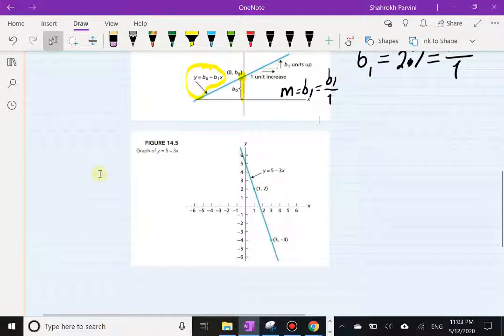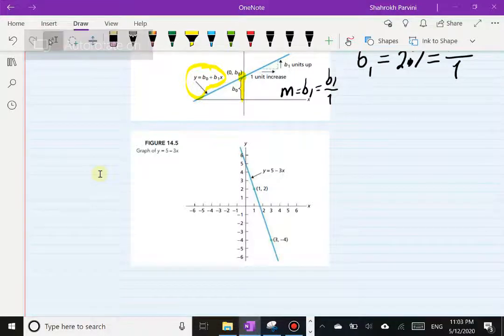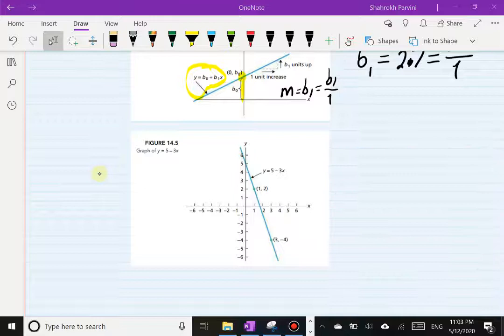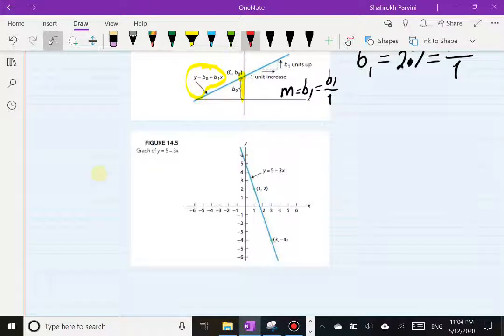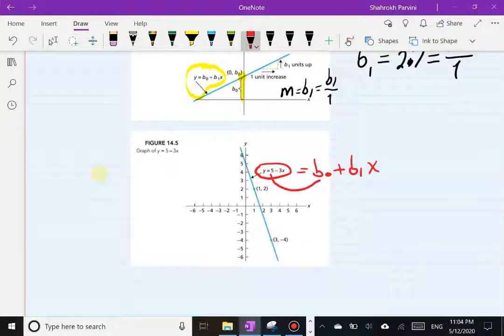There is an example just to show you this structure, this form of a line. For this example, the equation of the line is y equals 5 minus 3x. Remember this would be b0 plus b1x, so that means the 5 is acting as b sub 0. Your b sub 0 is 5, that means your y-intercept, and that's what that is.